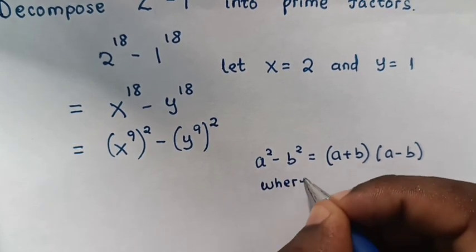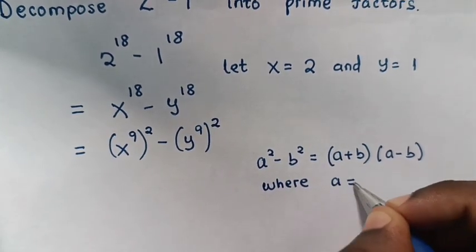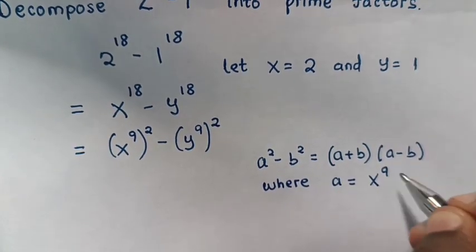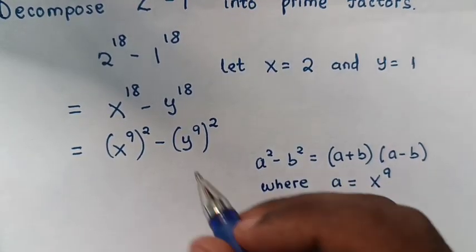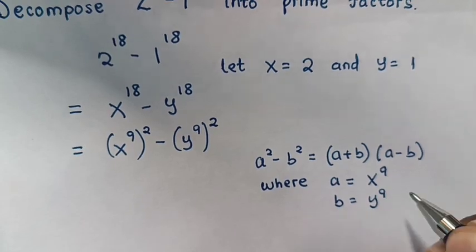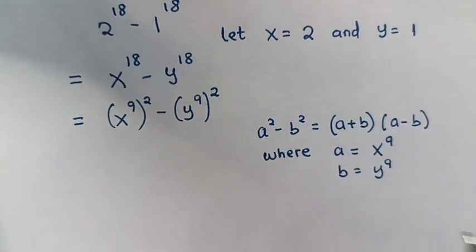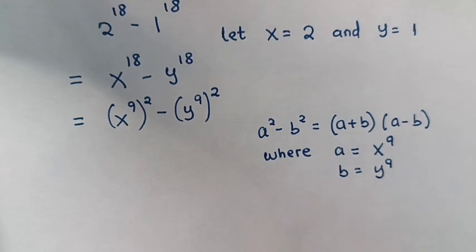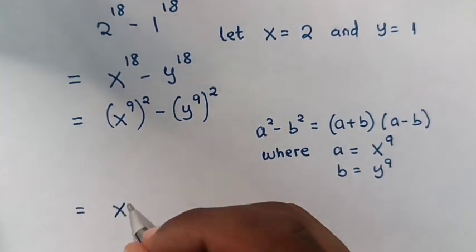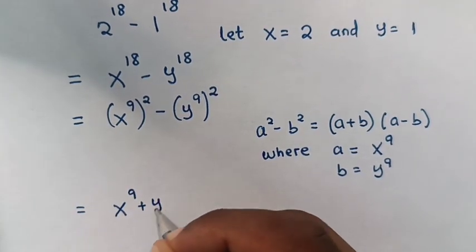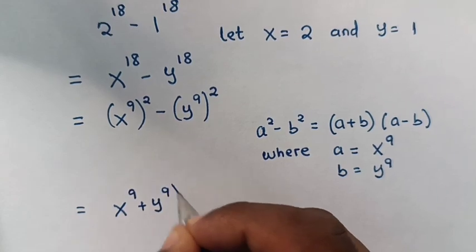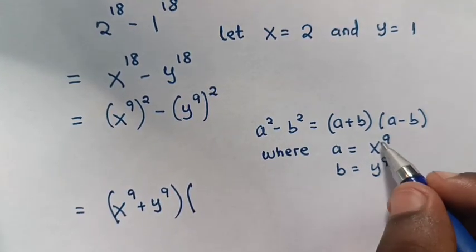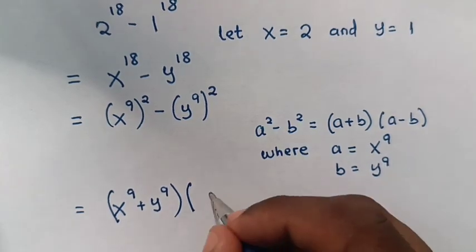From our expression, a is equal to x power 9 and b is equal to y power 9. So here (a plus b) will be (x power 9 plus y power 9), times (a minus b) which is (x power 9 minus y power 9).